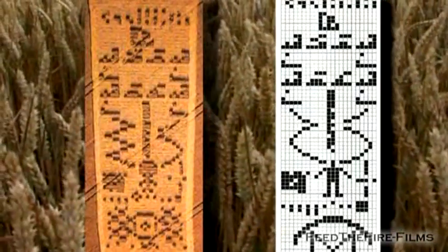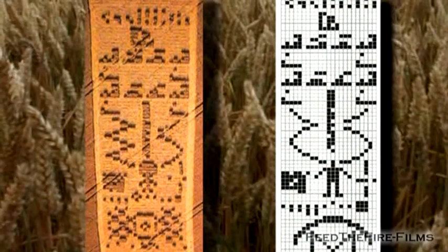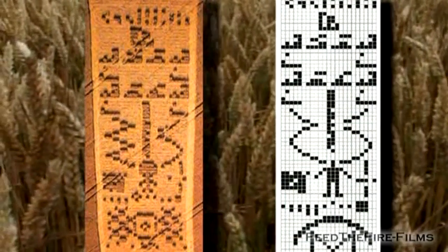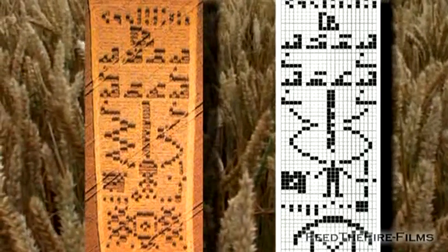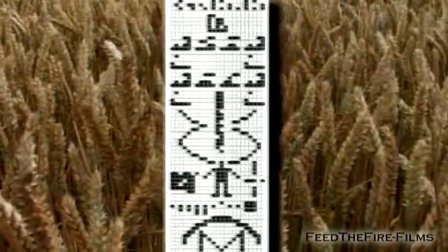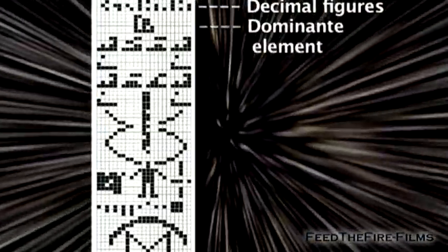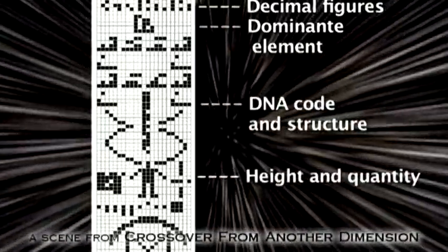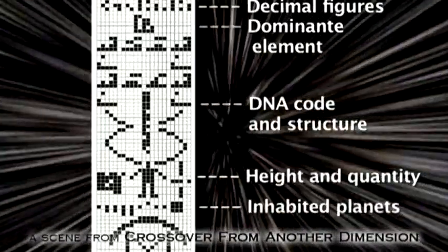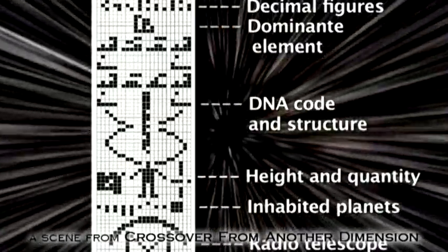27 years later, an identical pattern appeared in a crop field right in front of a similar radio telescope. However, on closer inspection it seemed to show that the code contained some fundamental differences. Sagan's message explained our calculation system, the dominant chemical substances within the elements that create life on Earth, our DNA code, human height and population, that we live on the third planet in our solar system, and lastly a sketch of our radio telescope.